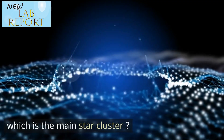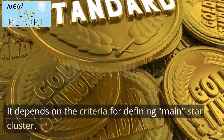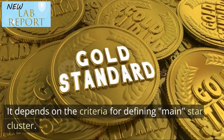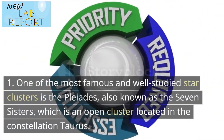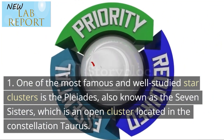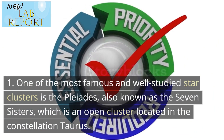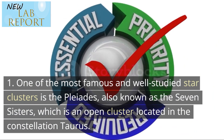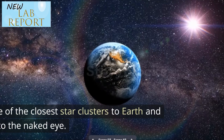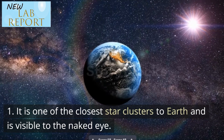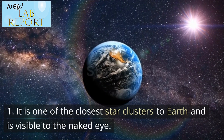Which is the main star cluster? It depends on the criteria for defining a main star cluster. One of the most famous and well-studied star clusters is the Pleiades, also known as the Seven Sisters, which is an open cluster located in the constellation Taurus. It is one of the closest star clusters to Earth and is visible to the naked eye.